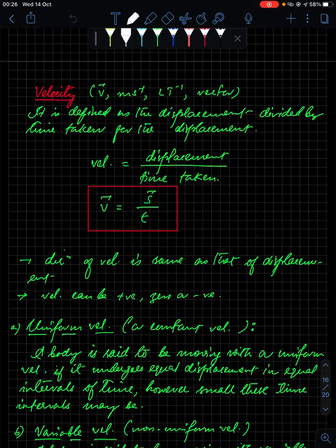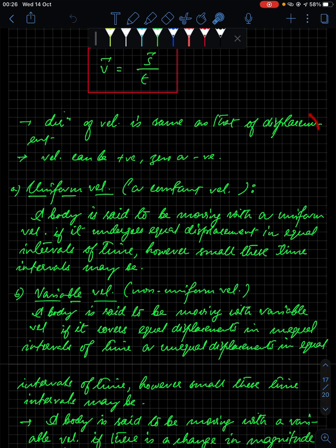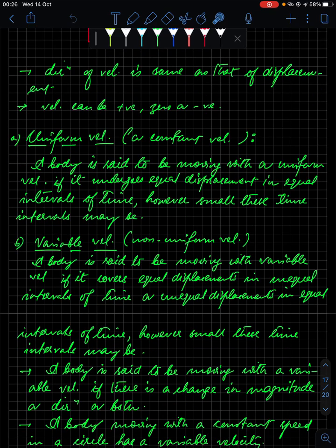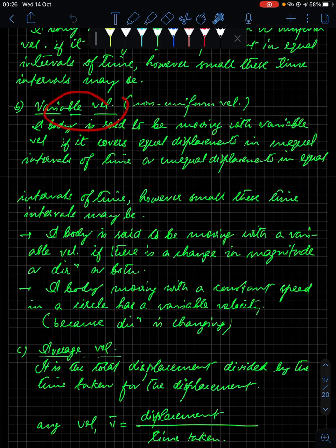Velocity is defined as displacement divided by time taken. You must include the vector sign: vector v equals vector s divided by t, that is displacement divided by time. The direction of velocity is the same as that of displacement. Velocity can be positive, zero, or negative.